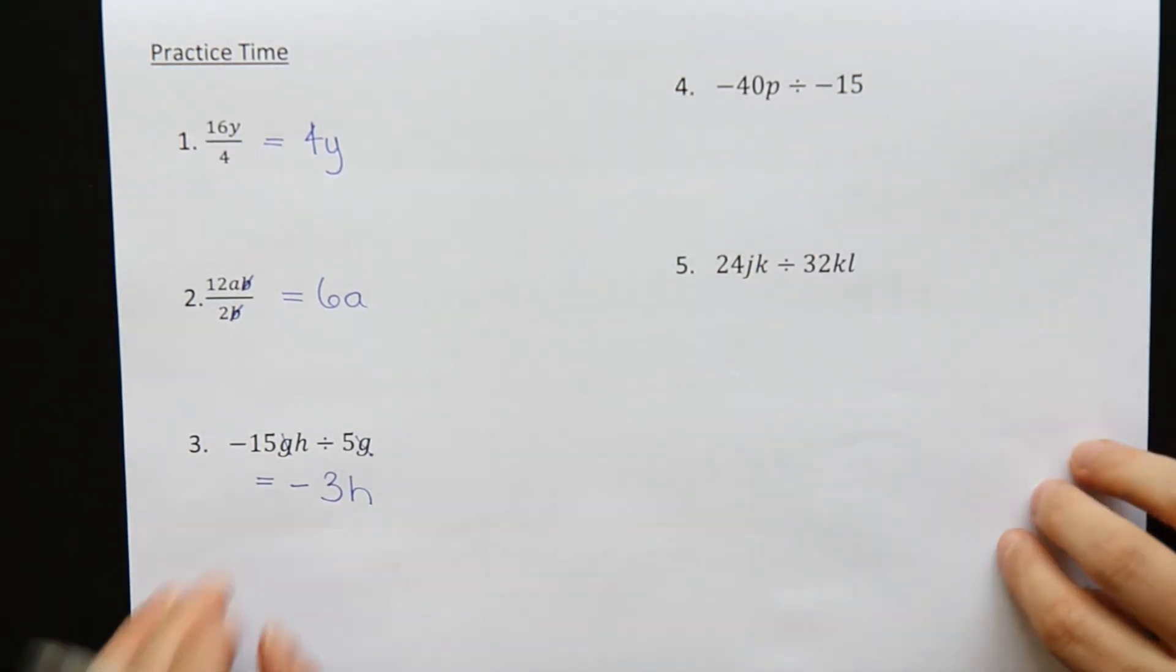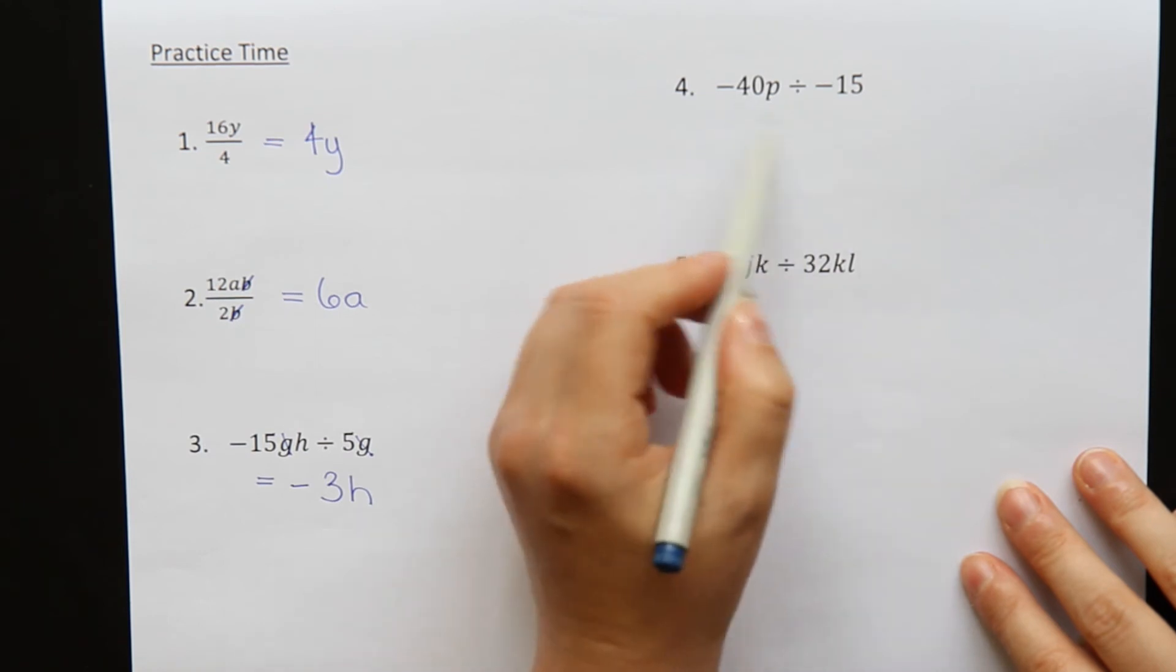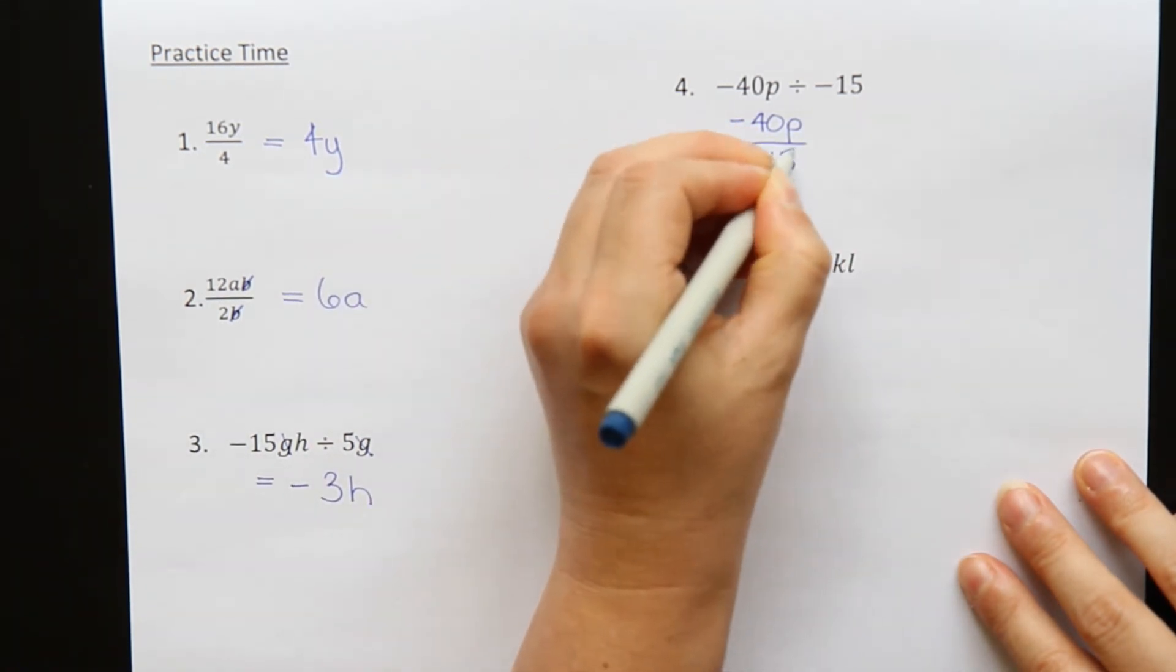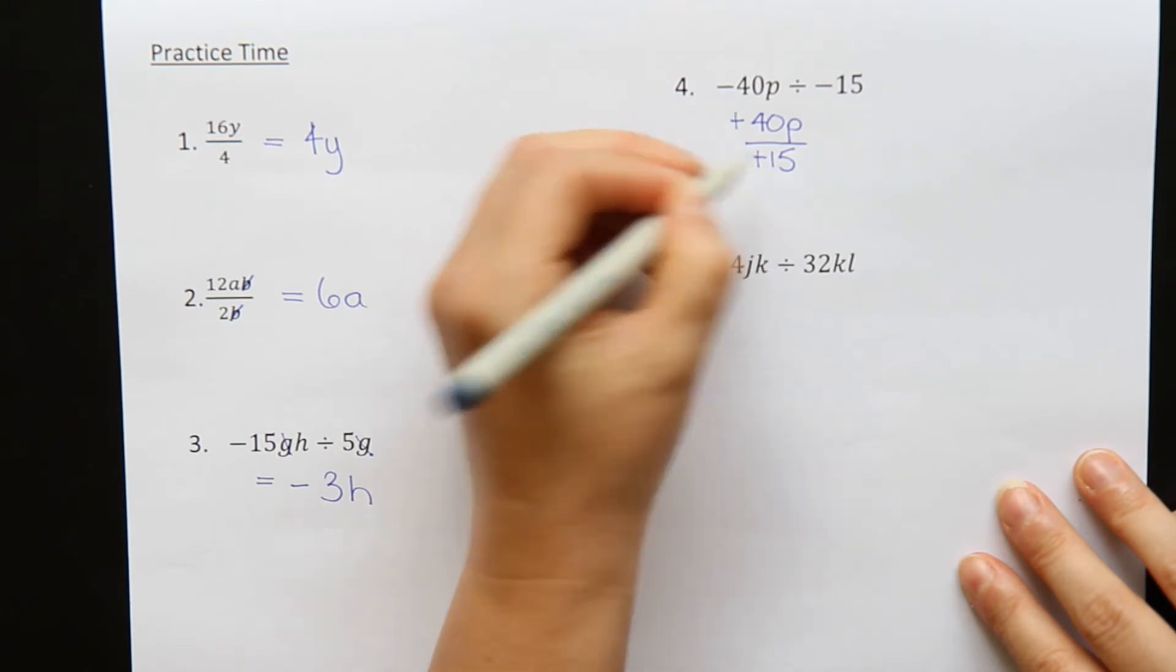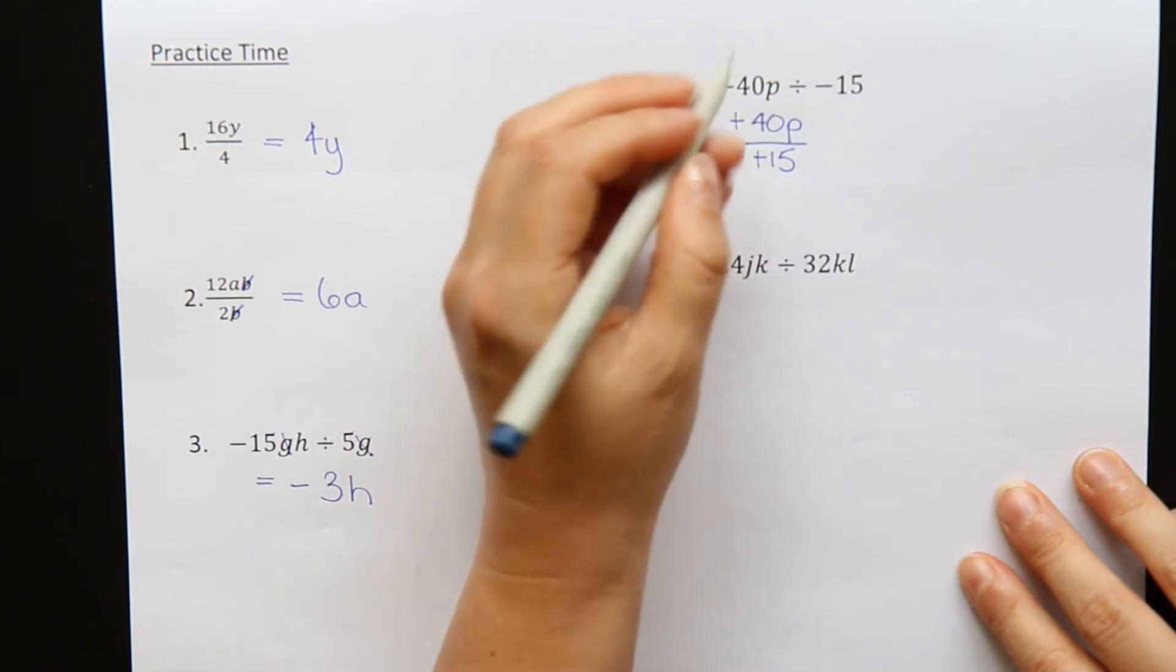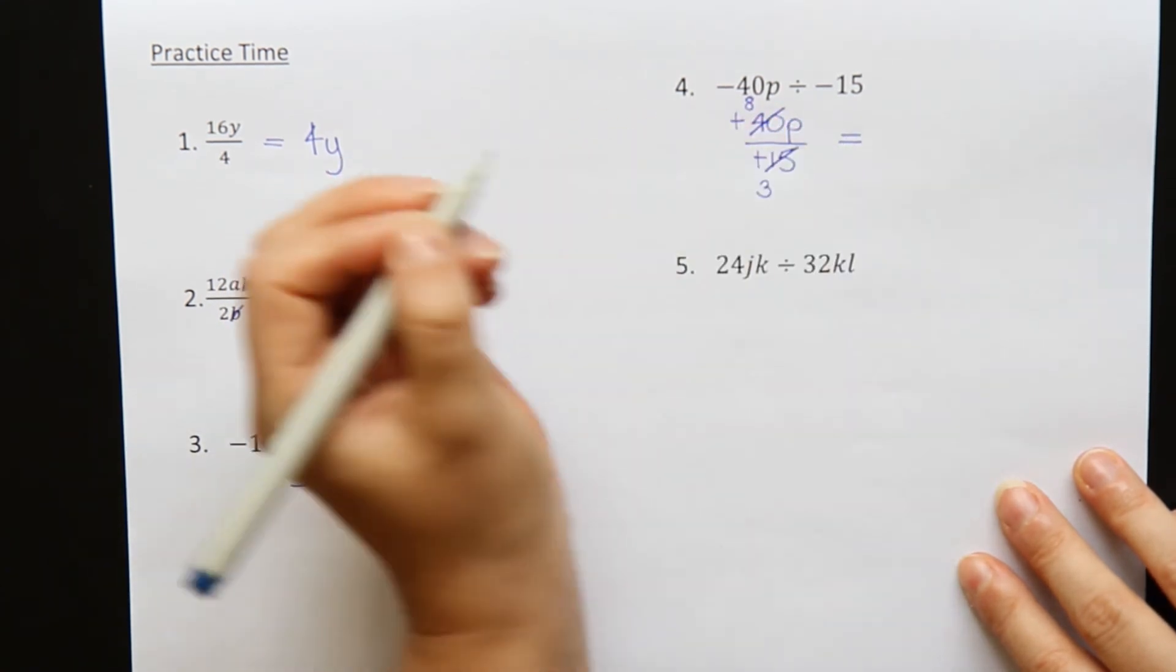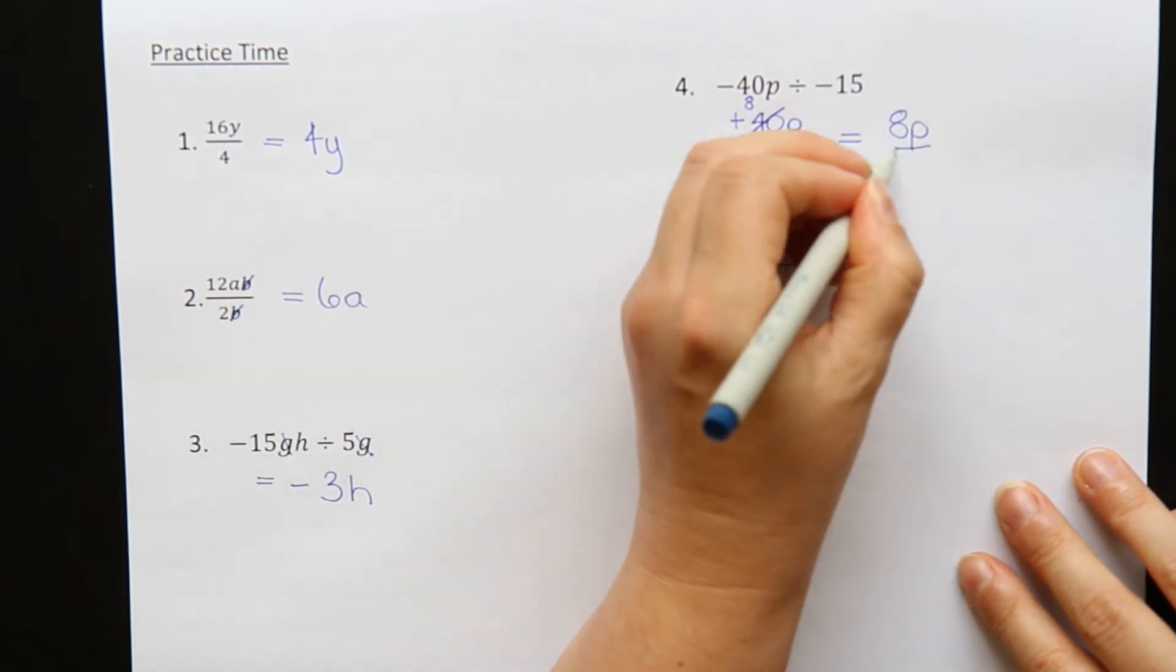Question four. Minus 40p divided by minus 15. 40 doesn't divide by 15 nicely. So when that happens, write your question as a fraction. Minus 40p over minus 15. And then try and simplify your numbers. Well, minus and a minus is going to make a plus. They're going to disappear. 40 and 15 can both be divided by 5.